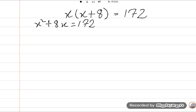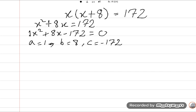So we can solve this equation with a lot of methods, but I use the quadratic formula method. So what is the value of a? 1, because here is 1. b is equal to positive 8, c is equal to minus 172.